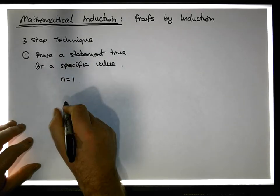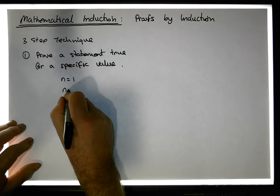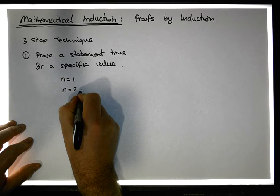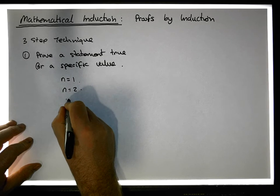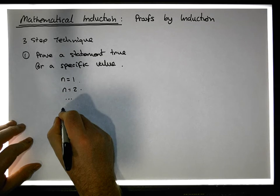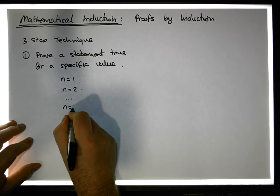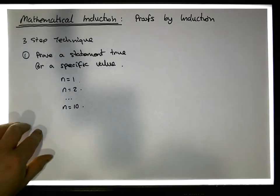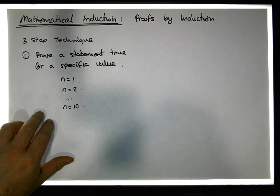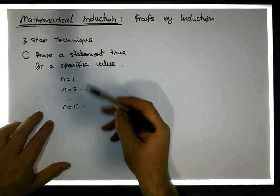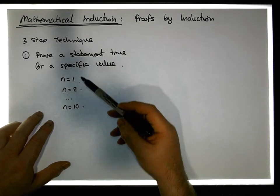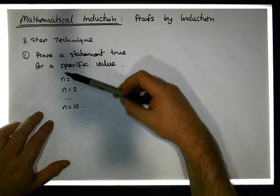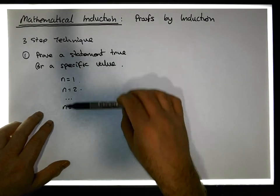But it doesn't have to be n equals one — it could be n equals two, or we could start at n equals ten; it could be any particular value. Usually where we start from is given by the problem itself.